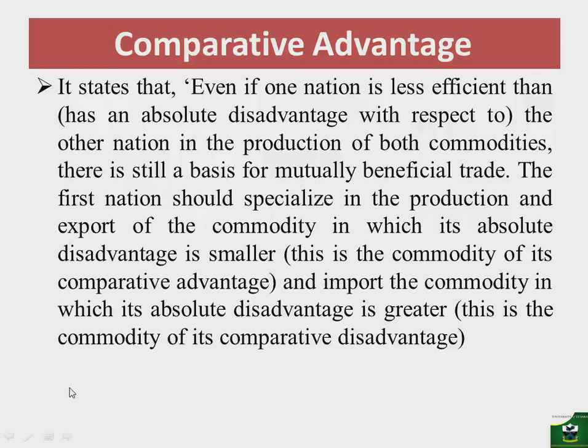In addition, even if nation A had an absolute advantage in the production of both X and Y, nations A and B could still trade. We look at the levels of absolute disadvantage: the one with a smaller absolute disadvantage should be left for nation B to produce, and the one with a greater absolute disadvantage for nation B should be produced by nation A.